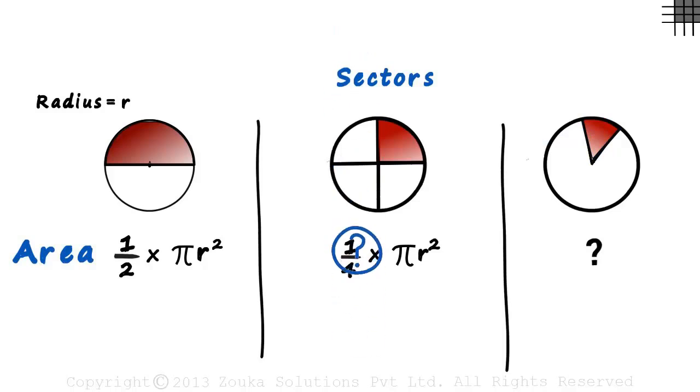Coming back to the question, how do we find the area of this sector? The area of a sector is proportional to the angle that the arc subtends at the center. It is called the sector angle.